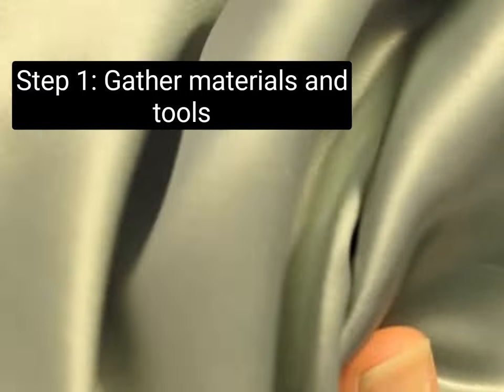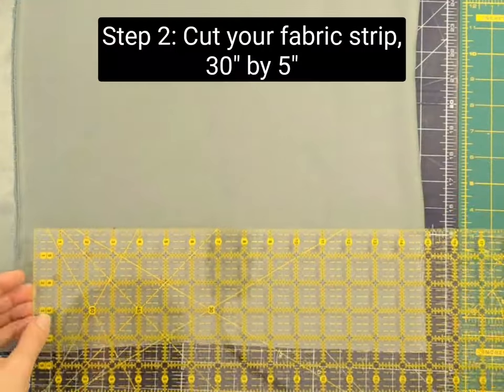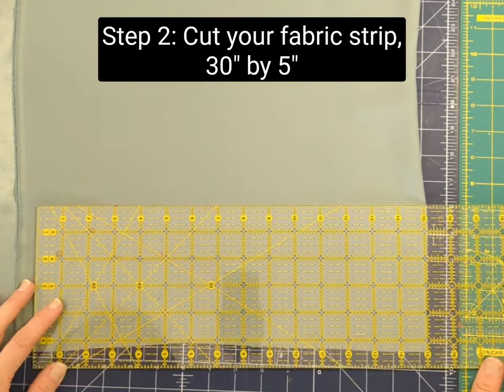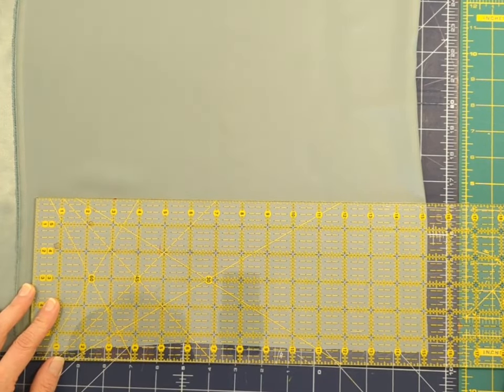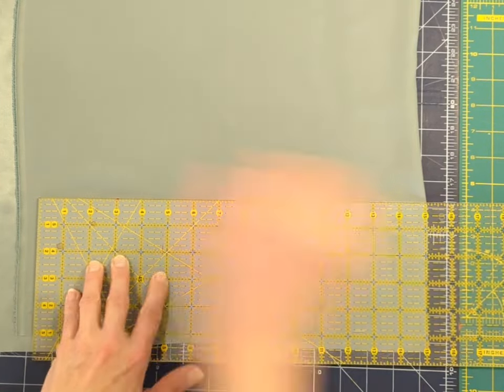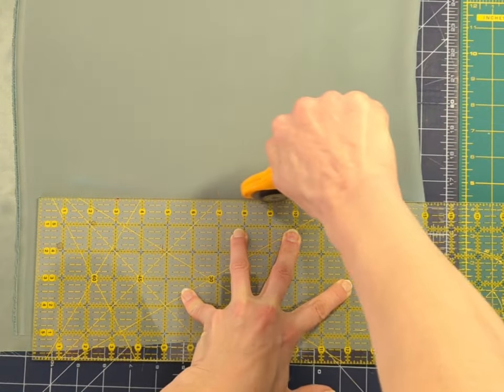Here I'm using my Olfa Rotary Cutter and my Omnigrid Ruler to cut this piece of mulberry silk. And I also have a scrap of elastic I'm going to use for the center. I'm going to cut this piece 30 inches long and 5 inches wide. So I'm cutting on the fold here and I'm measuring 15 inches and 5 inches wide.